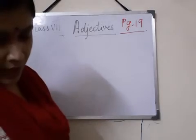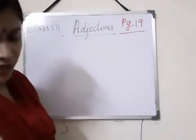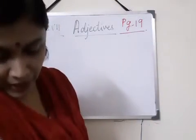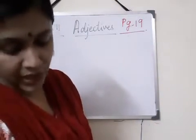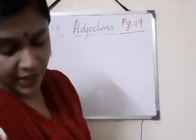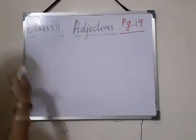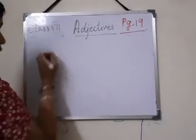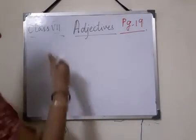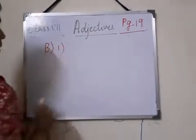For Exercise B you have to fill up with demonstrative — meaning this, that, these, those — or interrogative, any kind of question words, or possessive adjectives. We already know the possessive adjectives: my, our, your, his, her, and so on. Let us do Exercise B.